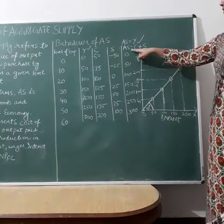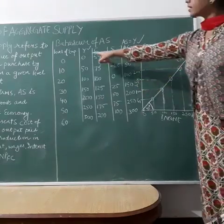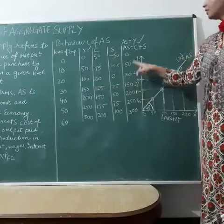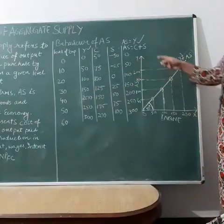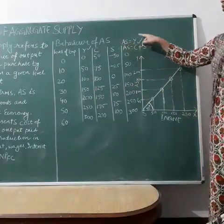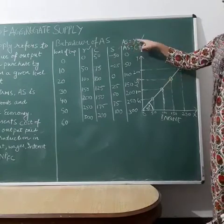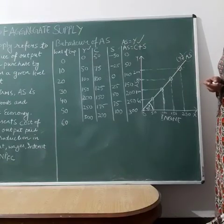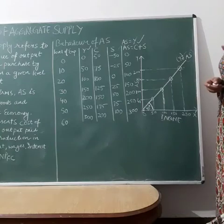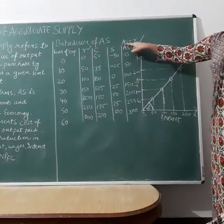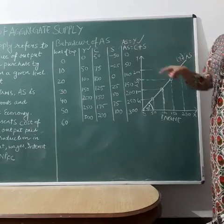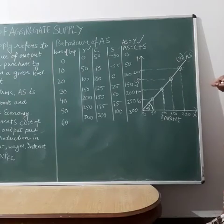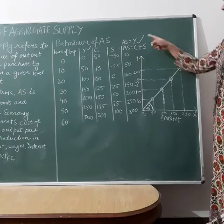One important thing to notice: all the values of aggregate supply are the same as the income level — 0 and 0, 50 and 50, 100 and 100, 150 and 150. So aggregate supply is equal to income level. If CBSE twists a question asking you to find aggregate supply by the income method, it simply means you have to find national income.